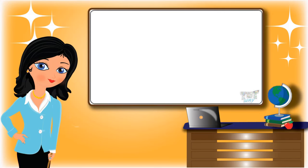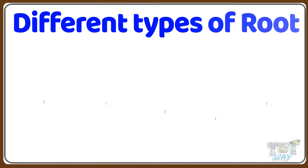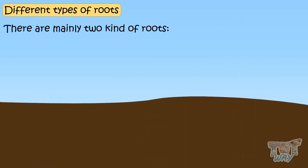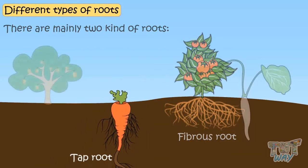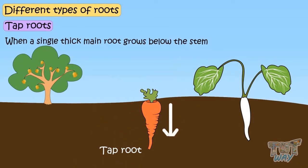Hi friends, today we will learn about different types of roots. There are mainly two kinds of roots: tap roots and fibrous roots. When a single thick main root grows below the stem, it is called a tap root.